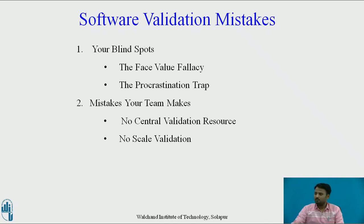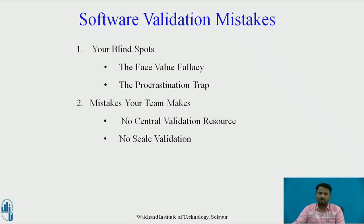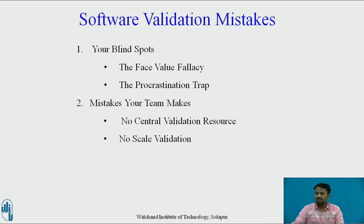The first team mistake is no central validation resource. Suppose employee 1 sends an email to employee 2 and updates some documents. Employee 2 sends the same document to employee 3 and updates it. Employee 3 updates the document and sends it to employee 4. In this way, throughout a whole day, many transactions happen and each employee ends up with a different version of the document — there is no central validation resource.